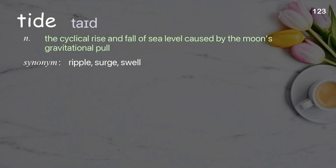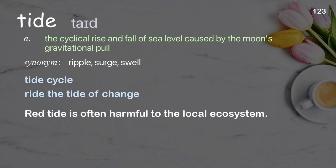Tide: the cyclical rise and fall of sea level caused by the moon's gravitational pull. Examples: Tide cycle. Ride the tide of change. Red tide is often harmful to the local ecosystem.